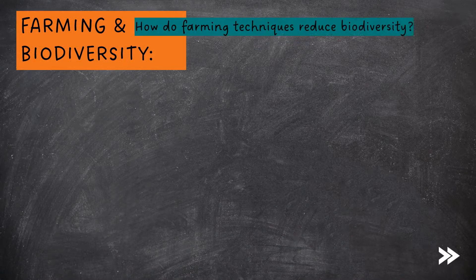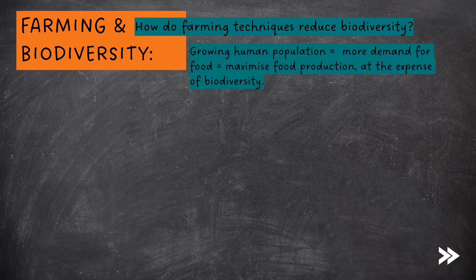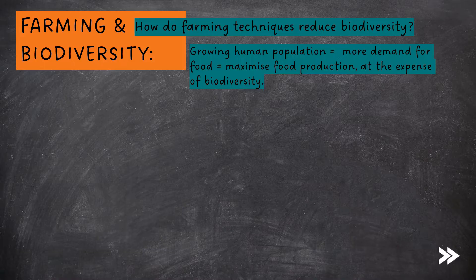Finally, we need to consider farming and biodiversity. How do farming techniques reduce biodiversity? Due to a growing human population, there is increased demand for food. Therefore, humans maximize food production, which unfortunately, in most cases, is at the expense of biodiversity.